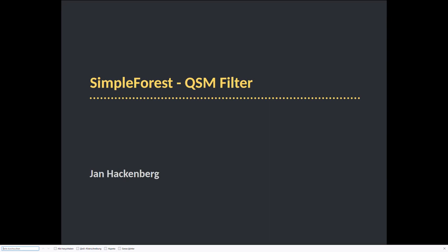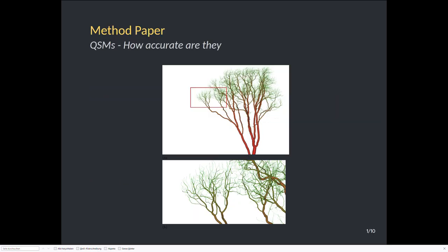Hello, this is Jan. I'm happy I managed to publish a QSM filtering routine and I would like to introduce it a little bit. When we look at QSM, we can see that they model major branching structure here colored in red. As well as, if we zoom into the branches, we can see that the thin branching structure is also modeled.